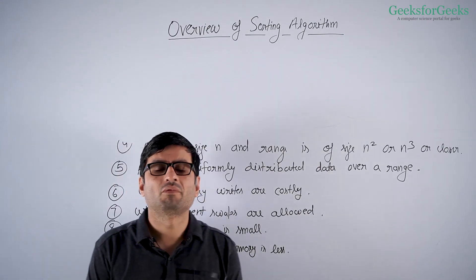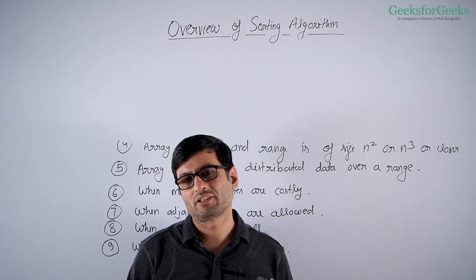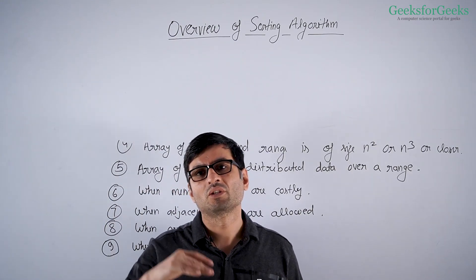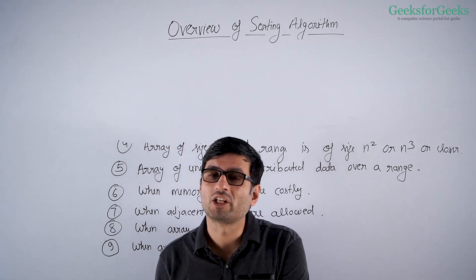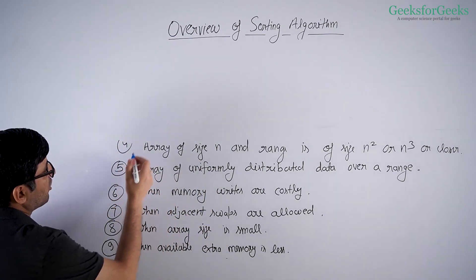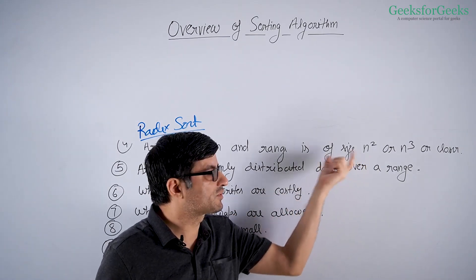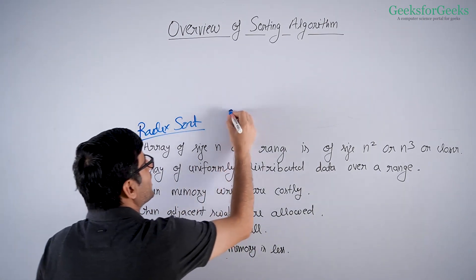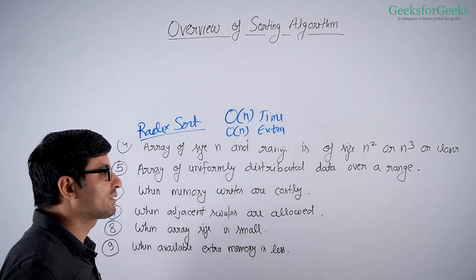Counting sort is a good algorithm when your range is really small. But consider when the range is slightly bigger — for example, n squared or n cubed. Say you have 10,000 elements and your range is from 0 to 1 lakh; counting sort would take 1 lakh extra space and 10,000 plus 1 lakh time. For such scenarios, there is another sorting algorithm called radix sort. Radix sort handles arrays where the range is up to n squared or n cubed, and it also sorts in O(n) time and O(n) extra space.